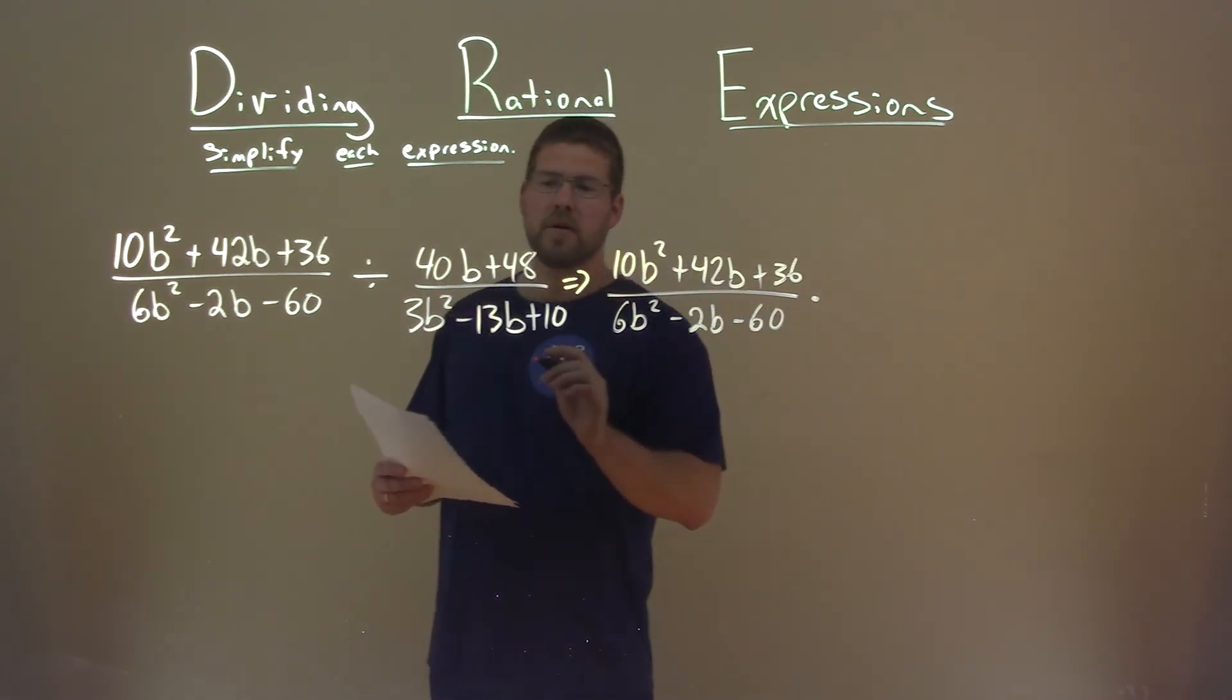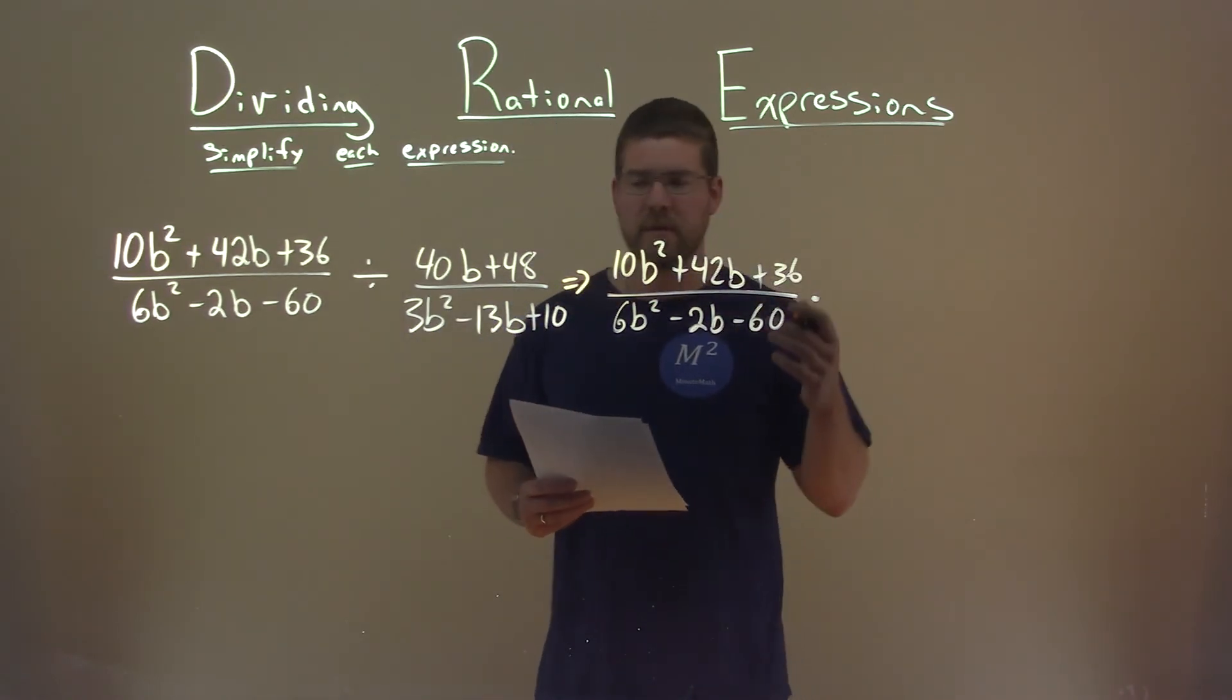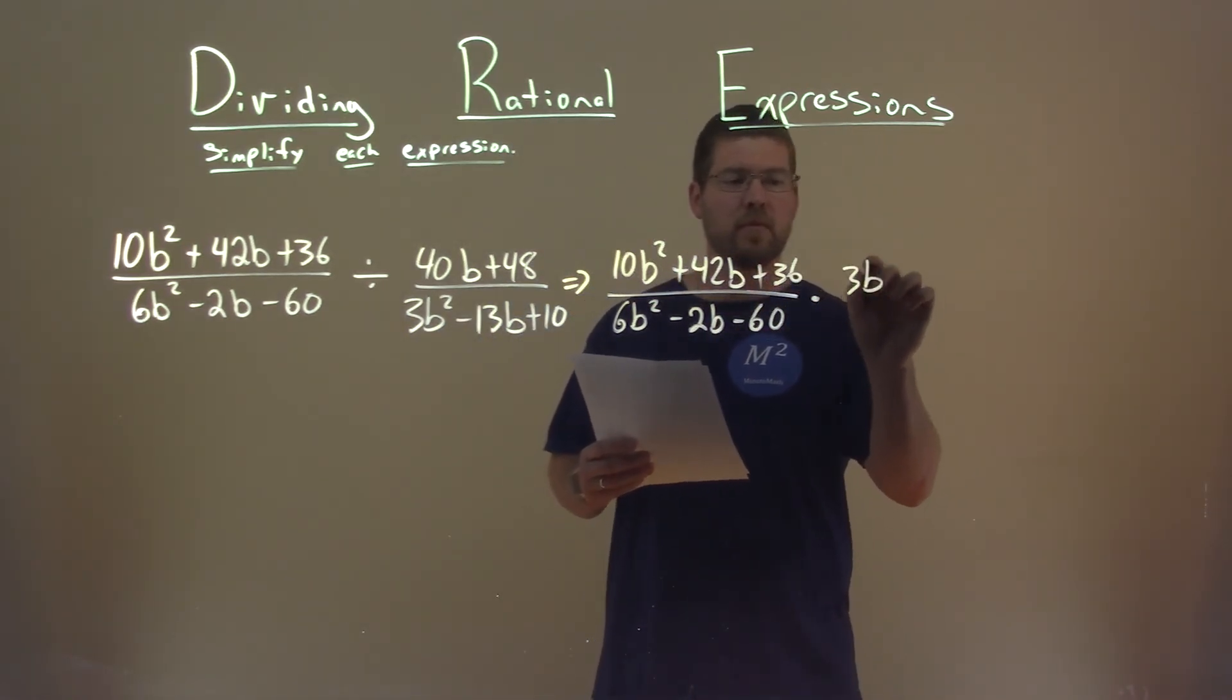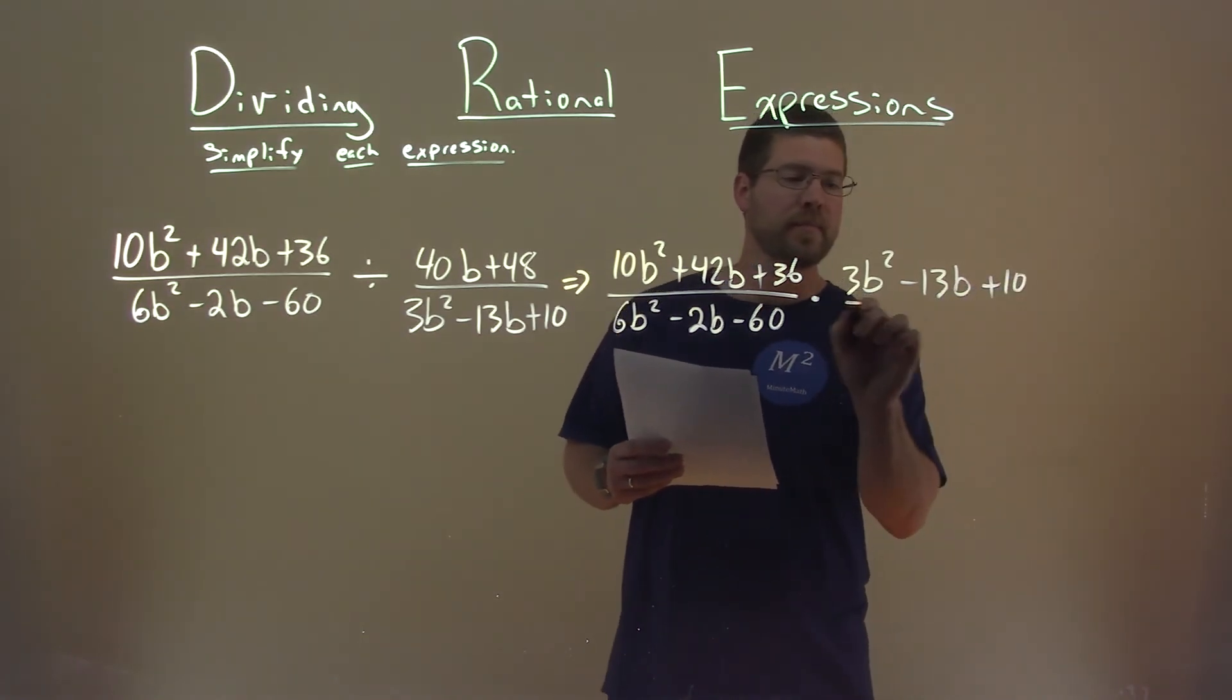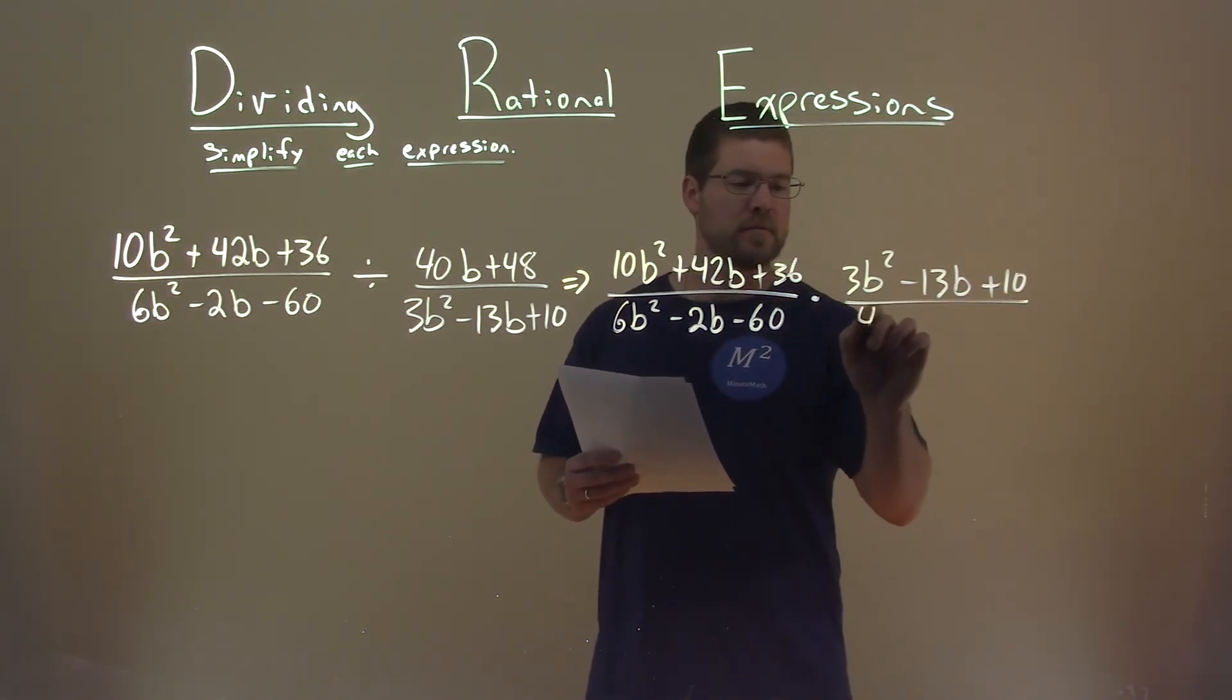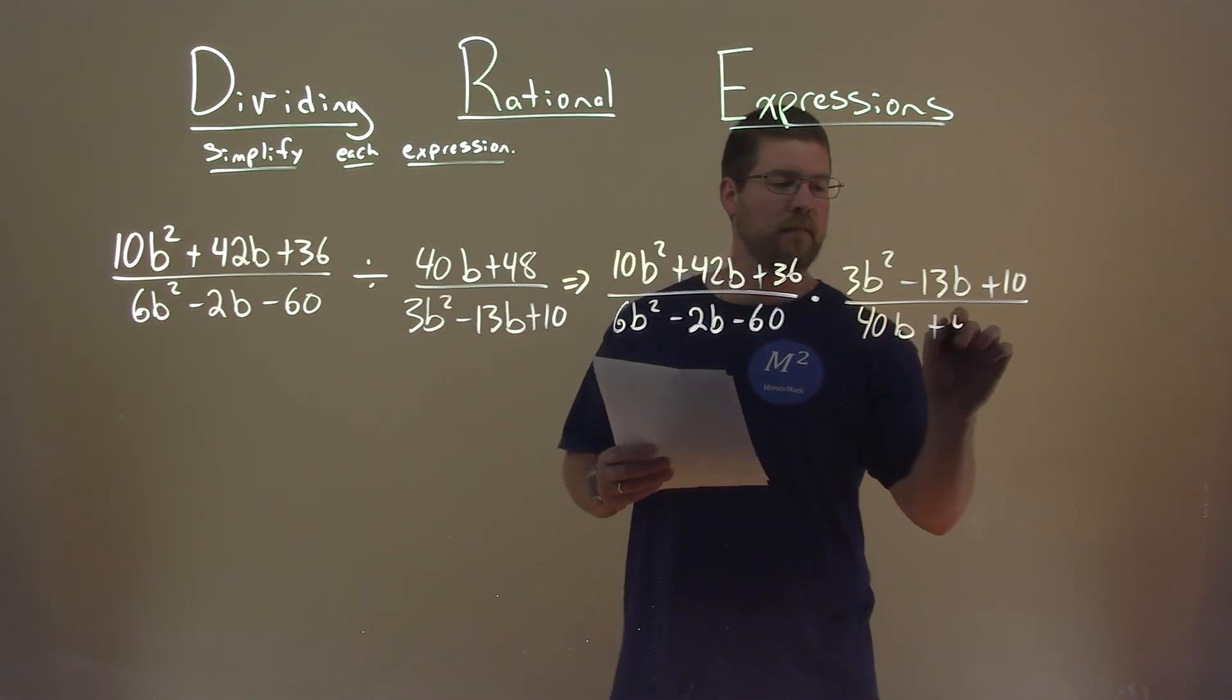But the second part is now being multiplied, and we're flipping the fraction around. 3b squared minus 13b plus 10 is in the numerator, and the denominator is 40b plus 48.